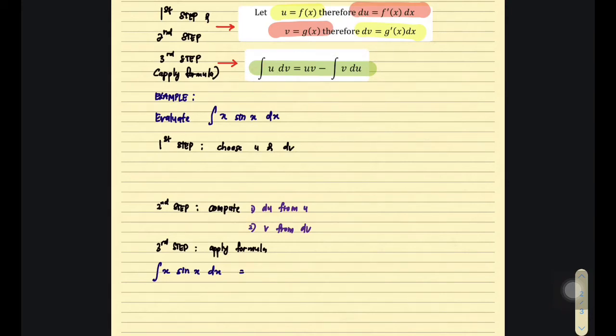Now it is more easier if we directly discuss one of the examples here. Look at this example. We need to evaluate this one. So what is the first step? The first step we need to choose the most suitable function that will become your u and also your dv. Let our u be equivalent to x, then our dv is equivalent to sin(x) dx.